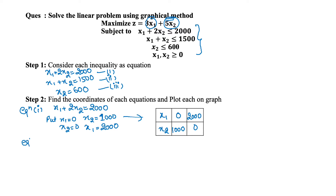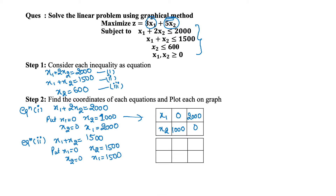For equation 2, x1 plus x2 equals 1500. Put x1 equals 0, then x2 equals 1500. Put x2 equals 0, then x1 equals 1500. So the coordinates for equation 2 are (0, 1500) and (1500, 0).